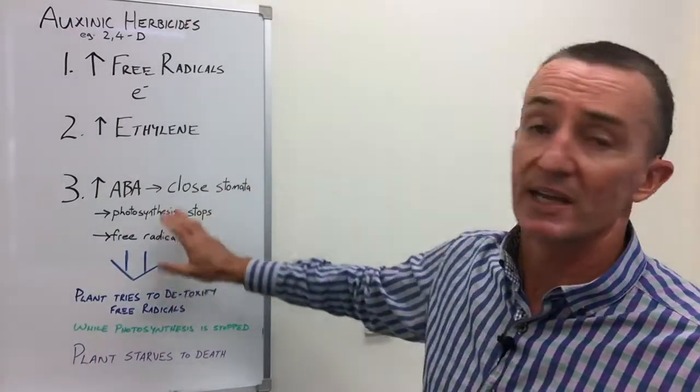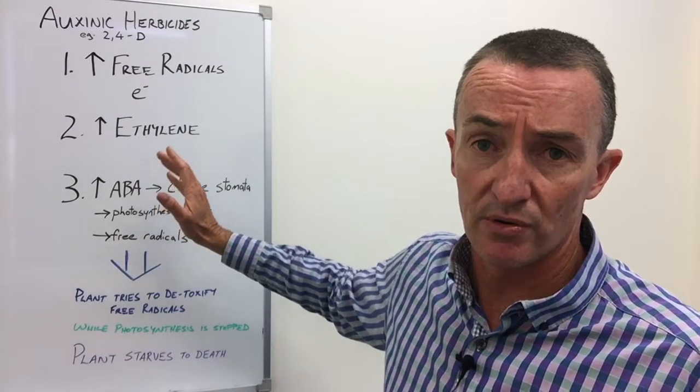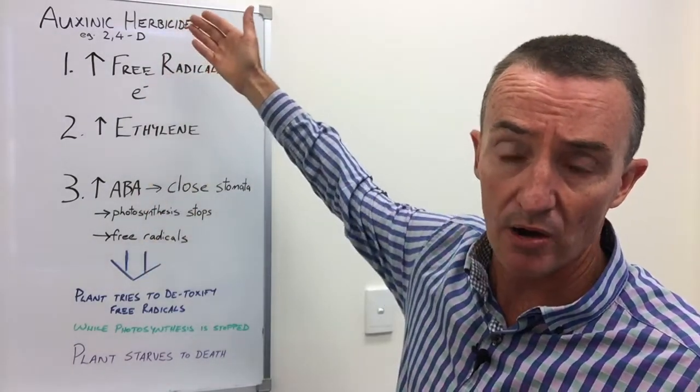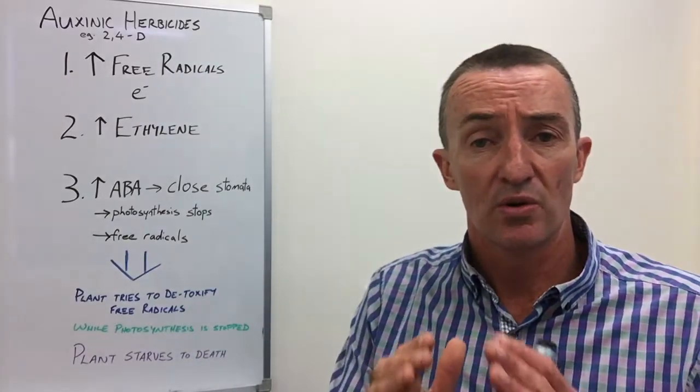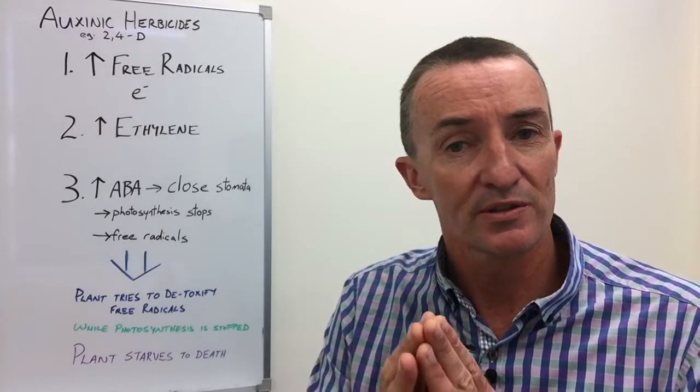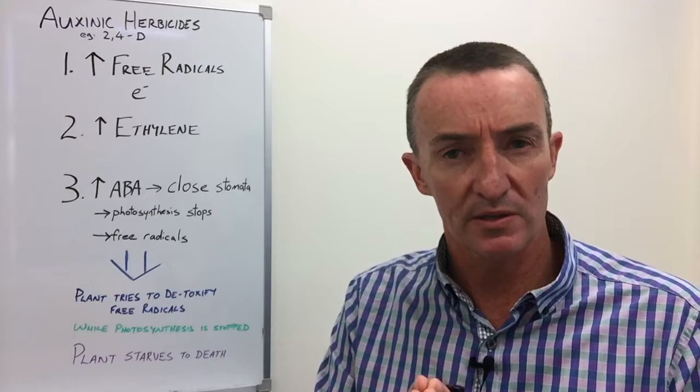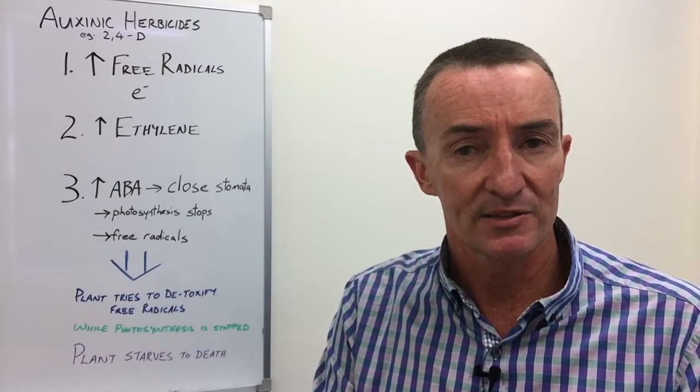Thirdly, we get an increase in abscisic acid levels through the high auxin levels. Abscisic acid causes the stomata to close. With the stomata closed, photosynthesis stops and the plant is not being fed.